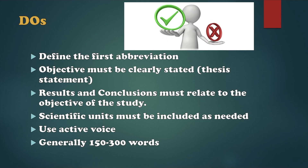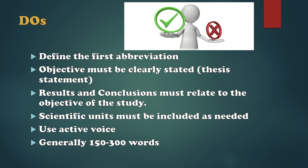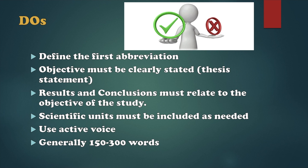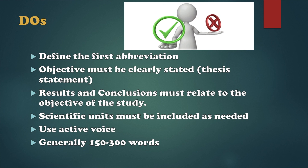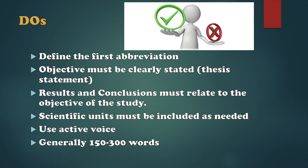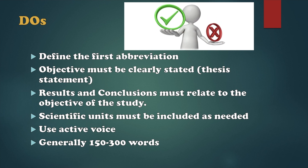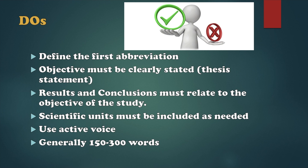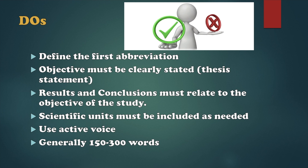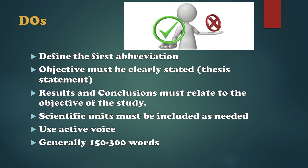These are some of the things we need to remember when writing our own research abstract. We must define the first abbreviation we use — we can use abbreviations but we should not overuse them. The first time we use an abbreviation we define it; after that, there is no need to define it again. However, we should limit the use of abbreviations overall. The objective of the study must be clearly stated — this is our thesis statement.